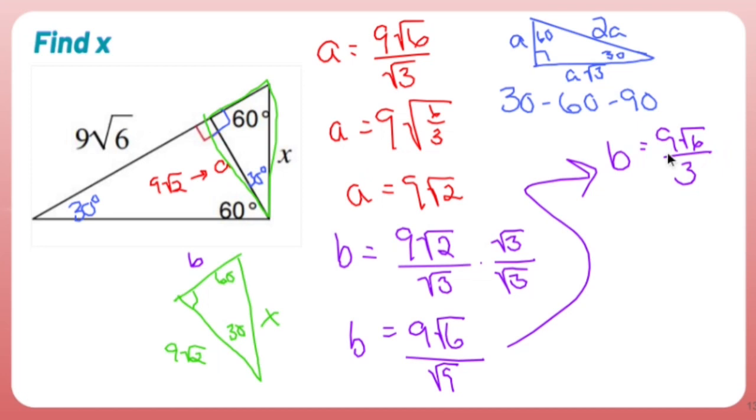So B is 9 root 6 over 3. 9 and 3 don't have square roots. So I can simplify 9 divided by 3 and make it just 3 root 6 because 9 over 3 is 3. So this guy, my smaller side, my smaller leg is 3 root 6.